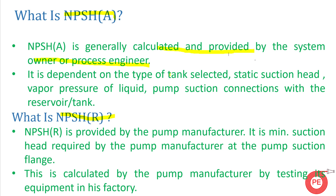NPSH available depends on: the type of tank selected, suction static suction head, vapor pressure of the liquid — which is one of the most important factors that describes NPSH available — and pump suction connections with the reservoir or tank. All these factors are considered while calculating NPSH available.